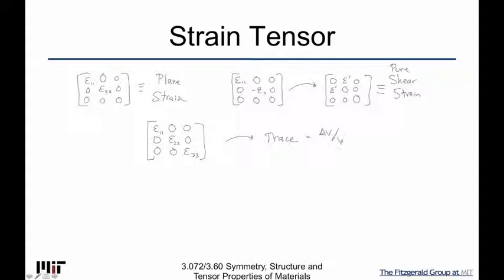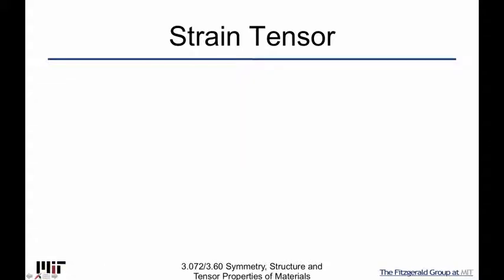And it turns out that the trace of this diagonalized strain tensor is the change in volume. So that's a very convenient property of the strain tensor. So let me just prove that to you very quickly. And I have a cube, yes, this should be a cube, a cube sitting here. And if I have L1, L2, and L3, let's imagine that body there.